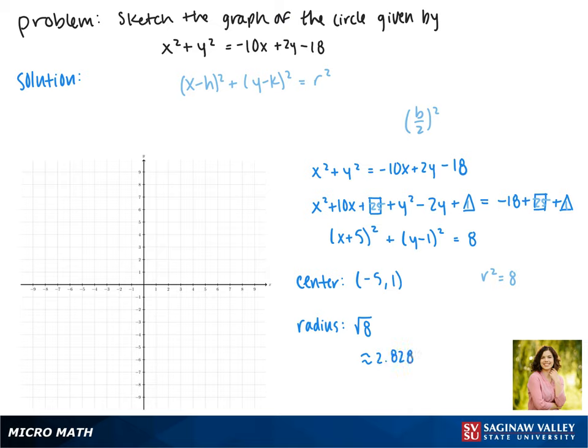This decimal approximation will help us graph it. So first we'll graph our center point at negative 5, 1. And then there are each of these points which are almost three units away. And this is the graph of our circle.